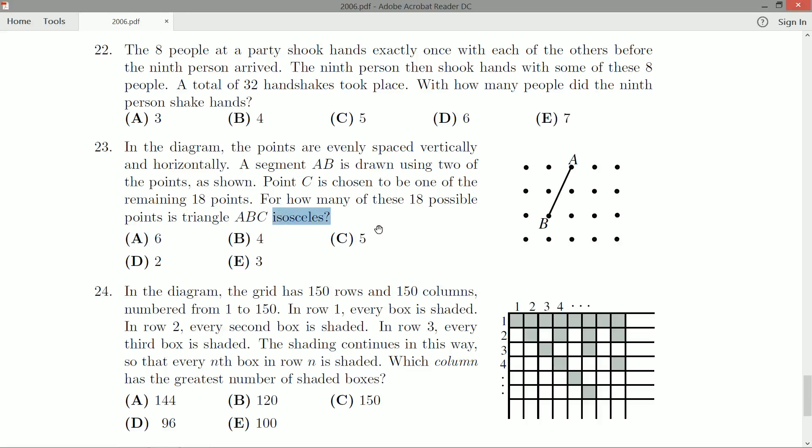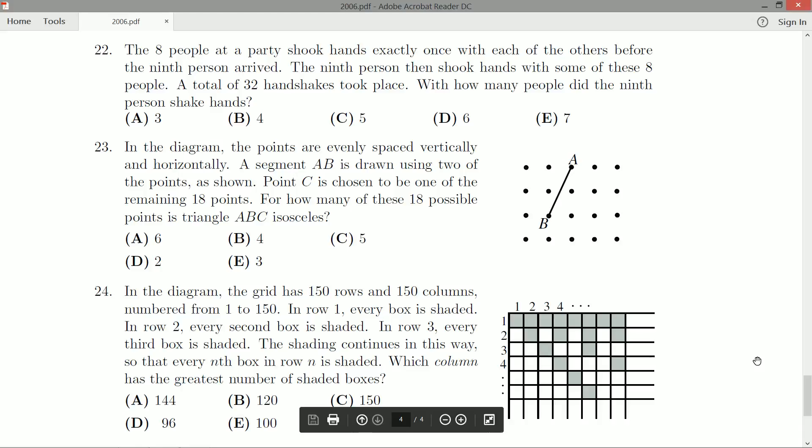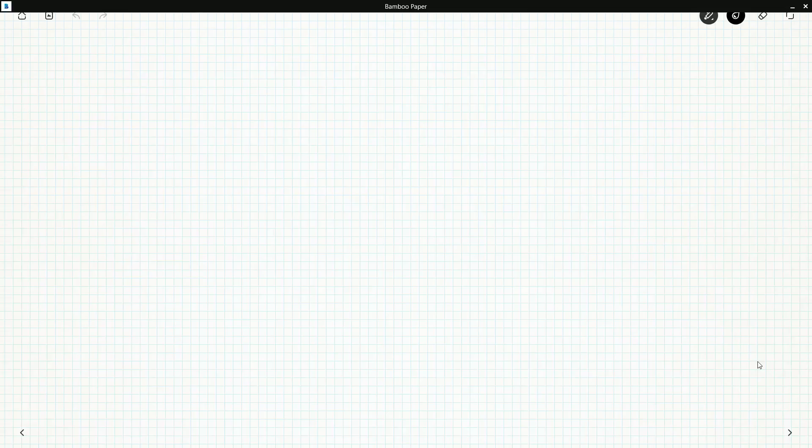Isosceles triangle. We're going to get an isosceles triangle with this other point C. Perhaps I should be drawing the grid as I talk. So it's five by four, five across. We get another point C, and that should get us an isosceles triangle.